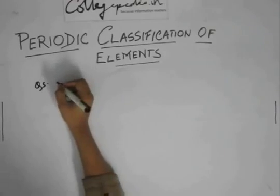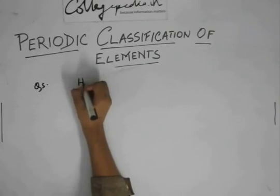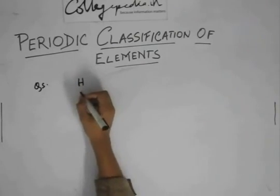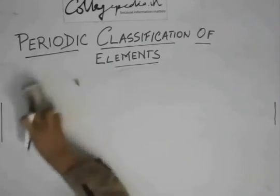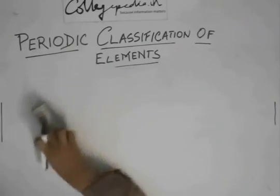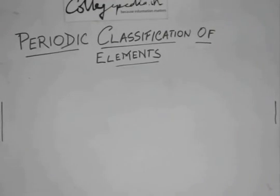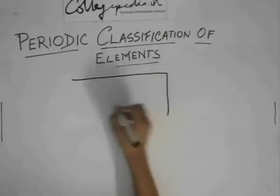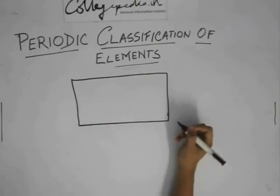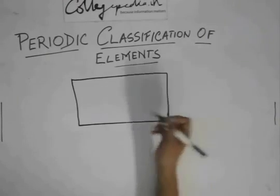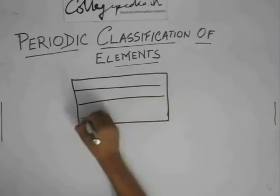So the question can be in the form of fill in the blanks, like this is Newland's law of octaves. So this is one group you call - let me first explain to you what a group and a period means when you have a table. Be the periodic table, or the Newland's law of octaves, Newland's octave table, there are rows and columns.